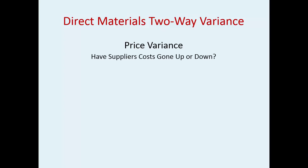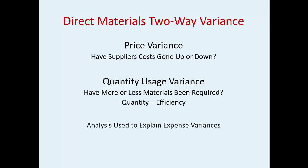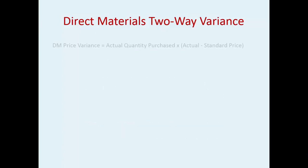For price variances, have your supplier's costs gone up or down? For quantity usage variance, have more or less materials been required? Because quantity is your efficiency — that's how you measure this. Your analysis is going to be used to explain the variances, because if it's explainable, you can make adjustments and fix the problem.